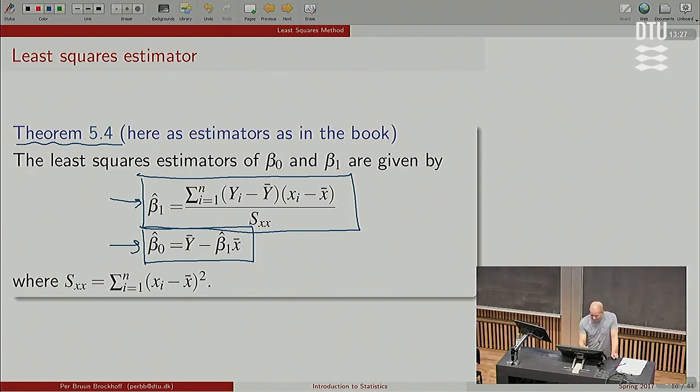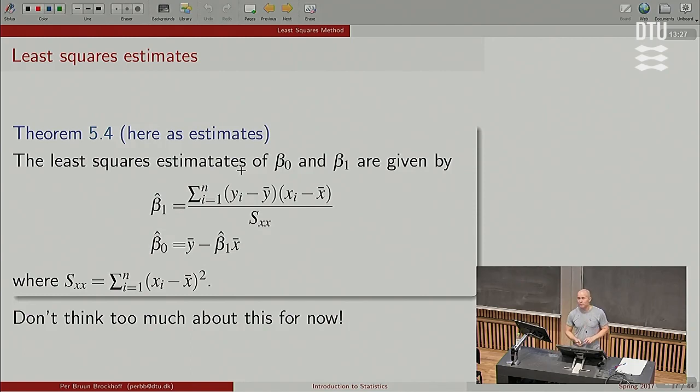Basically the slope is given by using capital Y's, and this is what, if we want to be formal, this is what we call the estimators - that's when we consider what we do as a random computation, as random variables. To actually apply this in practice, this is how it looks: it's the same formula, it's just the Y that has now become small y. And we have the challenge, which we share with everyone else writing statistics books, and we do exactly like everyone else - that even though we have a capital Y and a lowercase y, we don't distinguish in our notation for the betas. It's not good notation, but it's the same notation as the rest of the world.